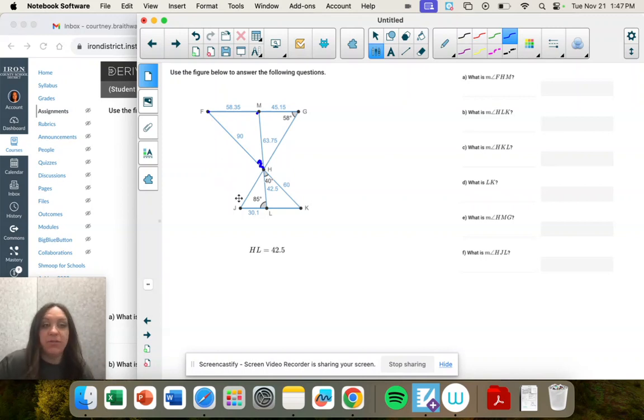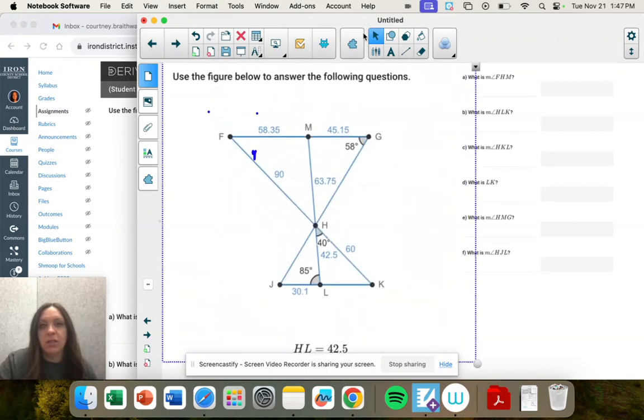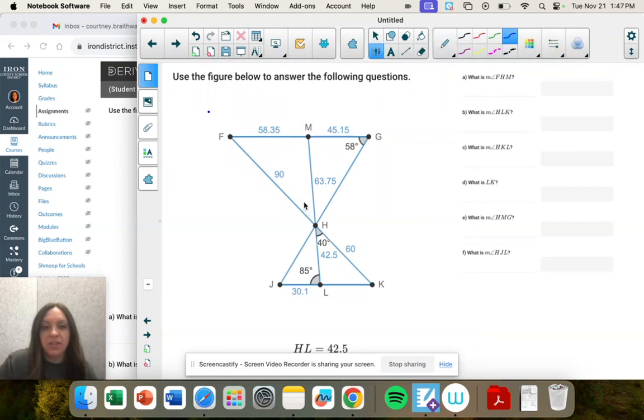And we're going to use our properties that we've learned like in quarter two. This is a vertical angle. If you have two lines that cross, the ones across from each other are the same. So that is 40. I'm actually going to make that bigger so I can write all over it. So this is 40 because that's 40 and they're across from each other. So this is 40.